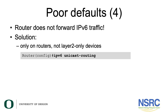The last and final default we'll be talking about is that the router does not forward IPv6 traffic. This solution is only on routers and not on layer-2-only devices. Remember, layer-2-only devices are switches with no routing capabilities. To enable IPv6 traffic forwarding, you would simply type the command 'ipv6 unicast-routing' in configuration mode.